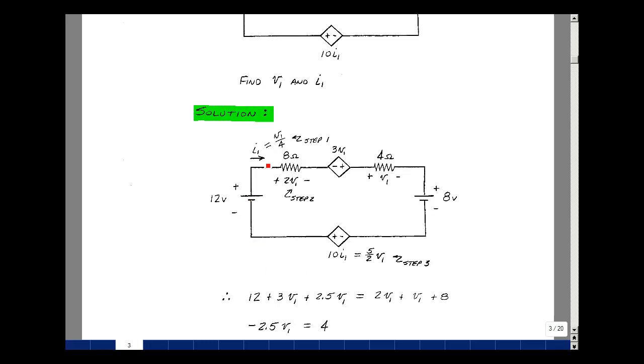So the rise in voltages, rise in voltage of 3V1, and then a rise in voltage of 5 halves V1, which is 2 and a half. So those are my rises on the left-hand side of the equation. The drops are 2V1, V1, and 8. That's on this side of the equation.